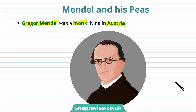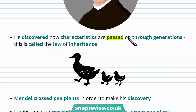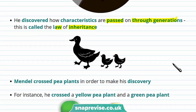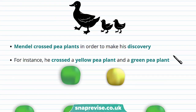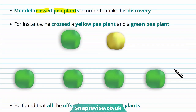But what did Mendel discover? He discovered how characteristics are passed on through generations. This is called the law of inheritance, and it allows characteristics in your parents to be passed down to you. Mendel made this discovery by observing plants — in particular, he crossed pea plants. So let's look at one of the crosses he did.